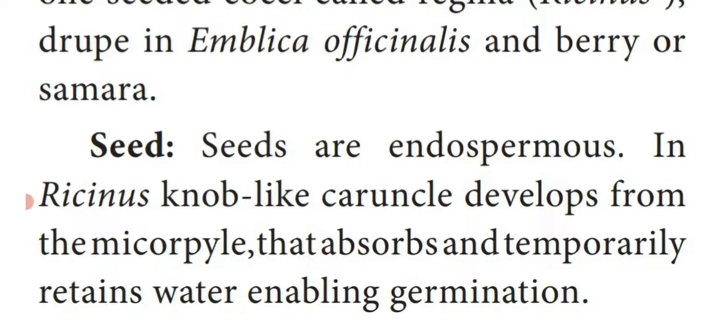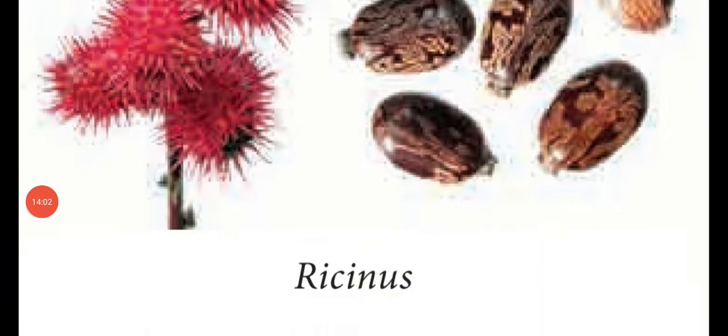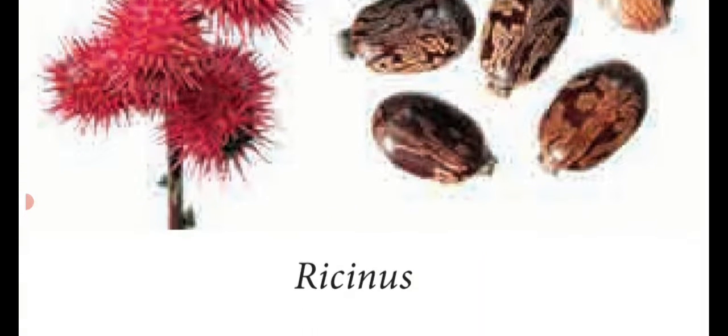Those are all the general characteristic features of family Euphorbiaceae. See the diagram — this is the Ricinus seed. At the tip, a small knob-like structure is called caruncle. Now we are going to see botanical description of the genus Ricinus communis — that is Castor or Amanak.